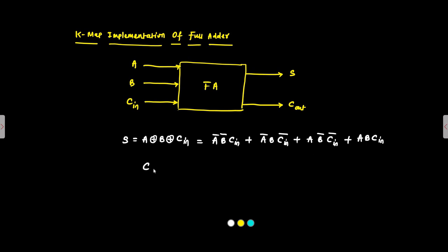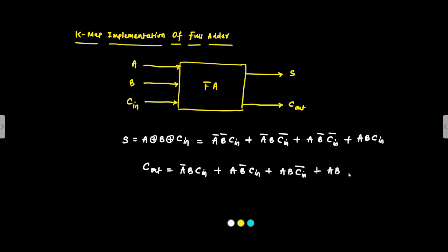The output Carry is written — we'll use not the simplified expression but the other expression, which is: A-bar·B·C-in + A·B-bar·C-in + A·B·C-in-bar + A·B·C. So we have to draw the Karnaugh map and try to simplify this expression.